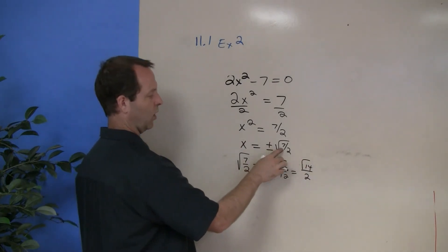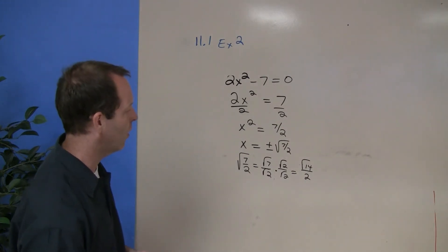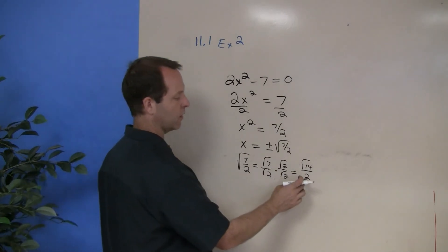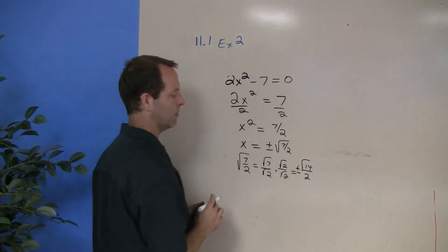So the square root of 7 halves, if I were to put that in appropriate form, is the square root of 14 over 2. And as plus or minus, there's my solutions.